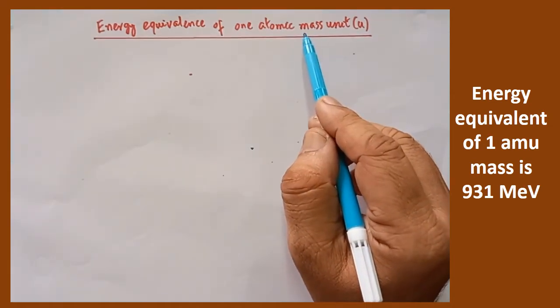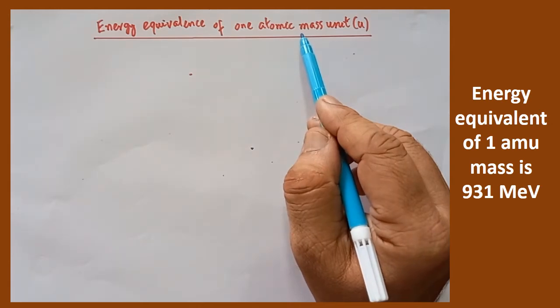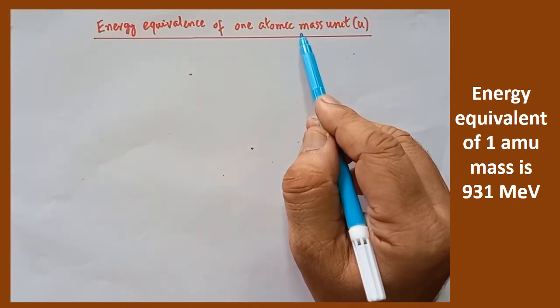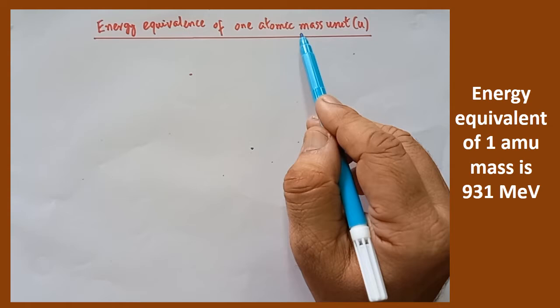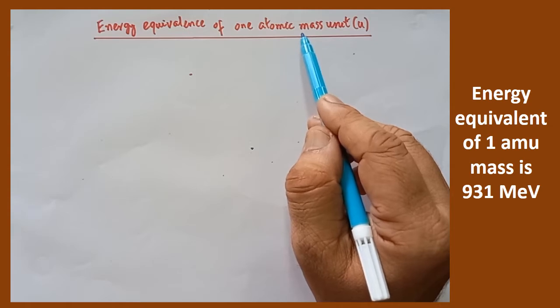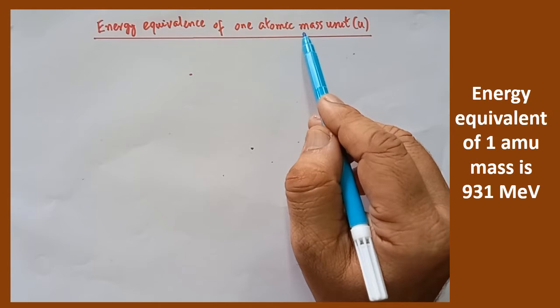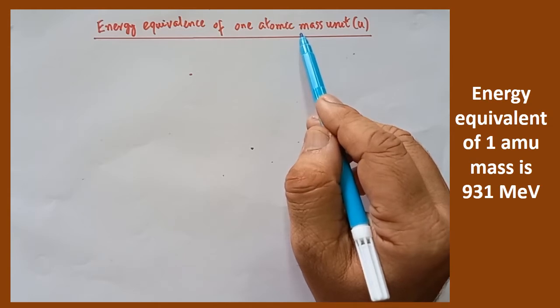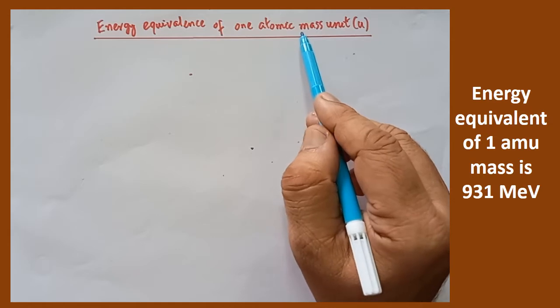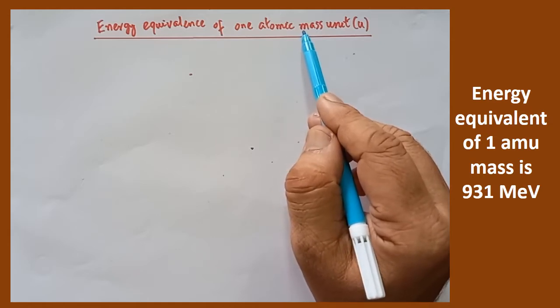This is very small unit. When any one proton or neutron is smashed, you will get some amount of energy. That mass will be converted into energy. Now we are going to calculate how much amount of energy can be obtained by smashing one atomic mass unit, that is one u.